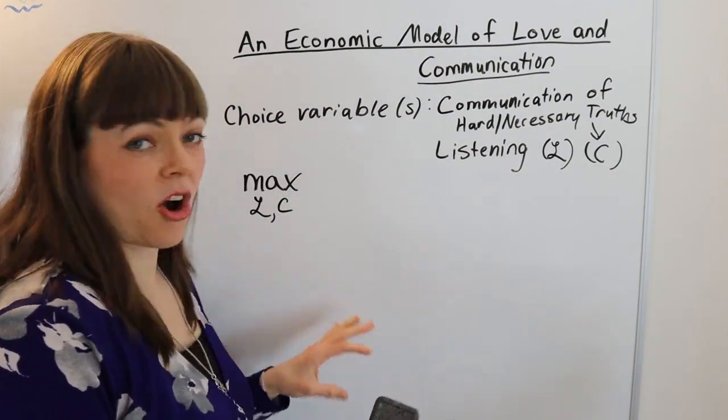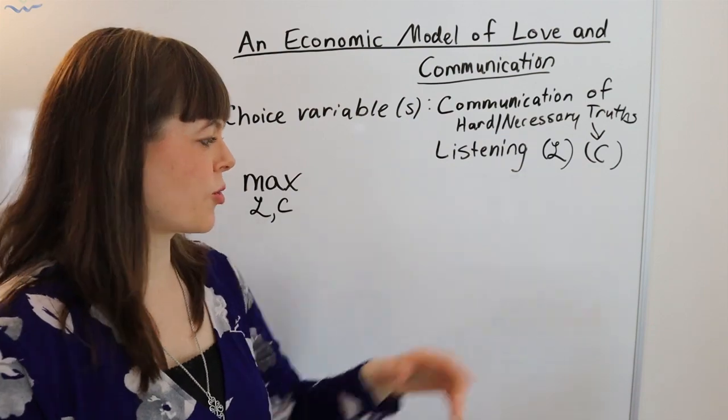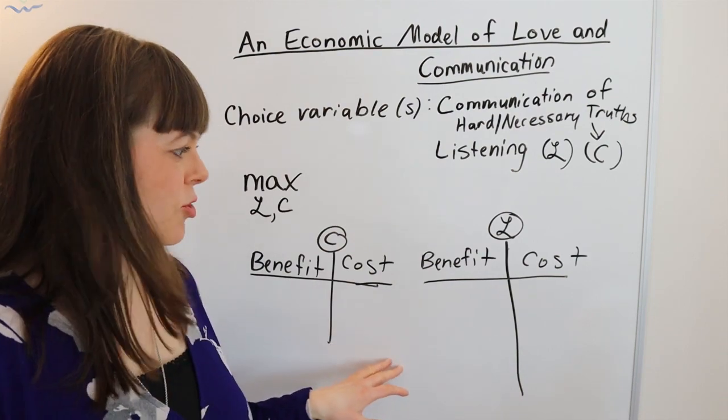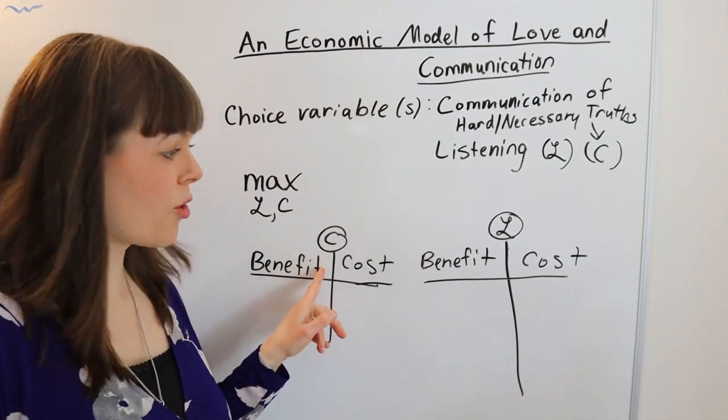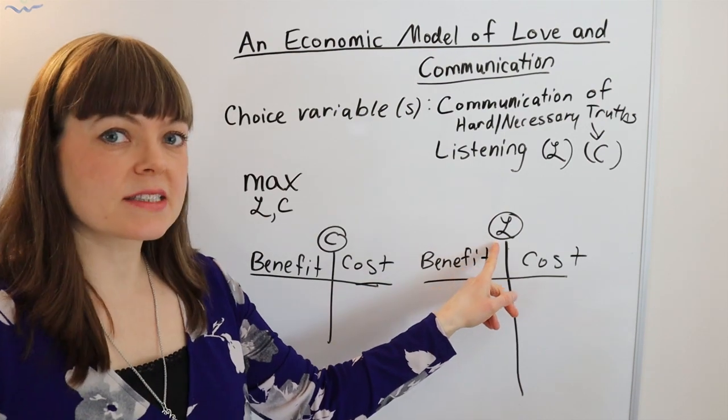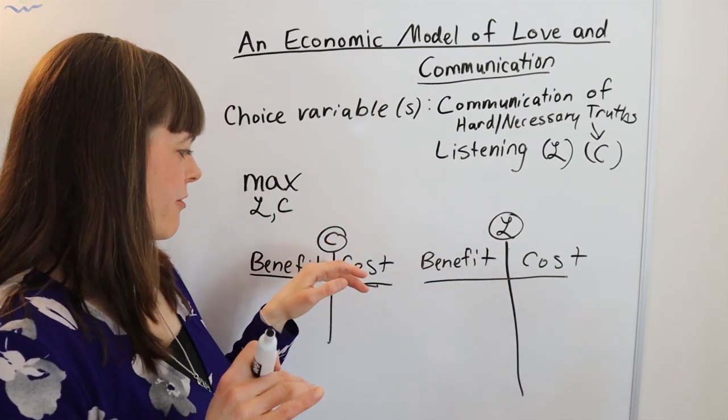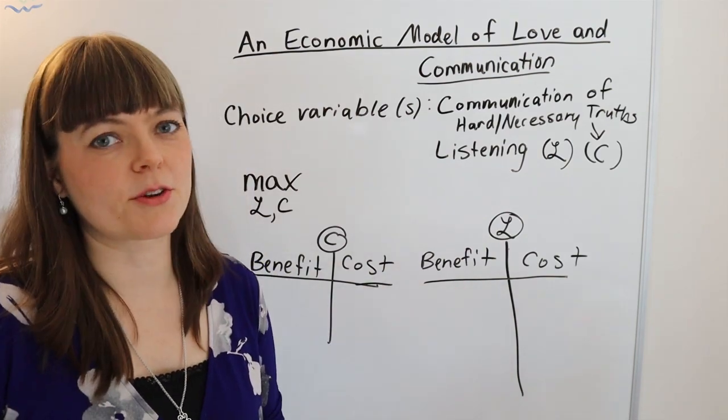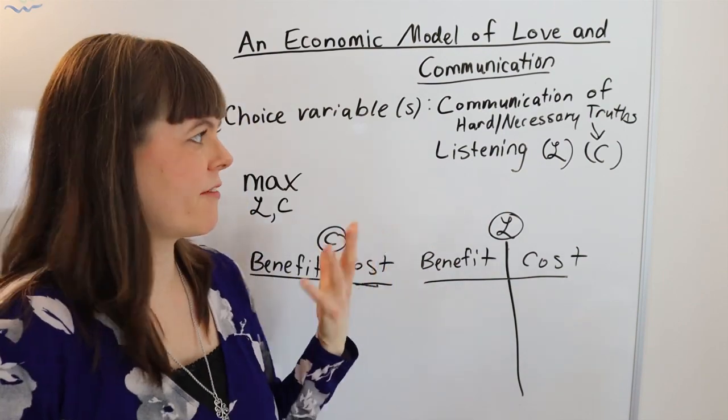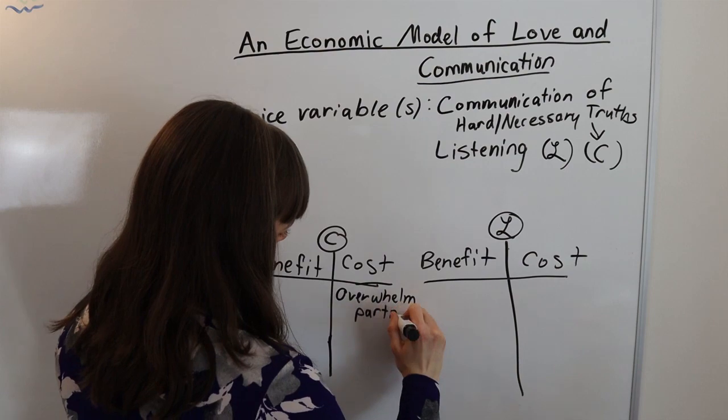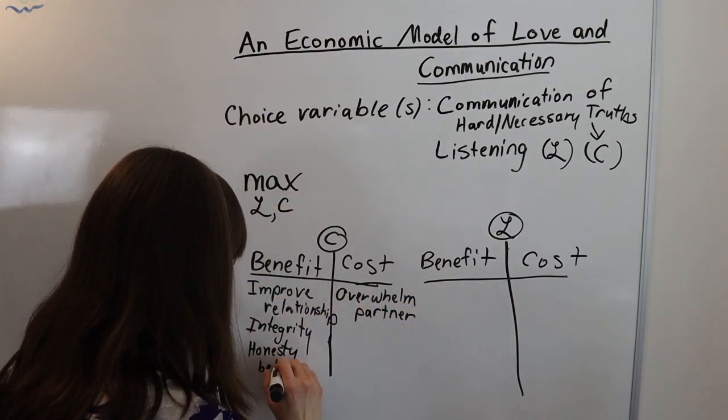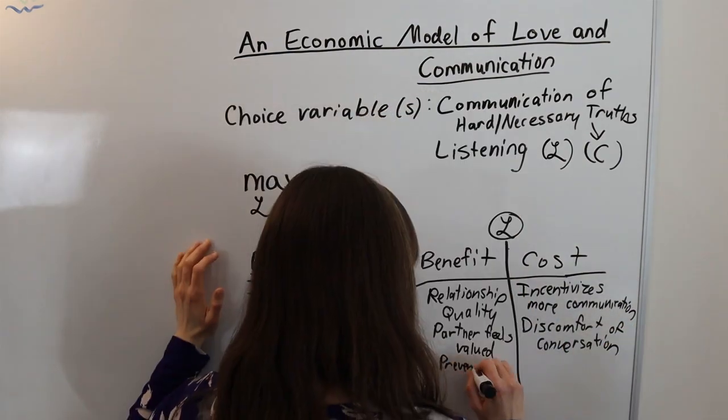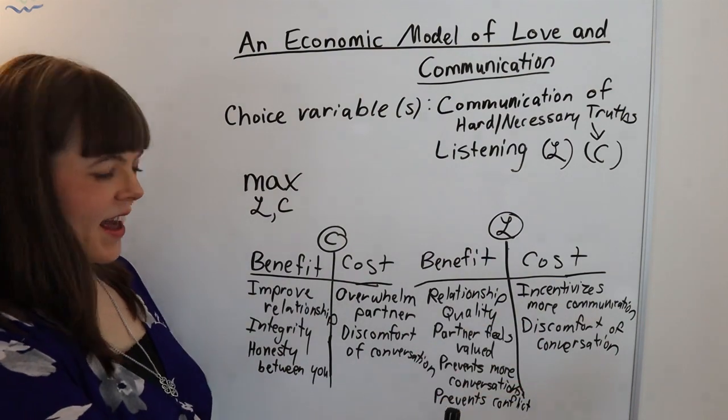Now, the next step is to come up with a cost benefit table for both of our choice variables. So let's do that. And these are really just brainstorming ideas. Why would you want to communicate more? Why would you want to listen more in a relationship? And by the way, it's possible for communication to be too high. Sometimes you get too much feedback from your partner and that's going to have a negative effect on the relationship. So I might want to keep that in mind. And if possible, build that into the model.